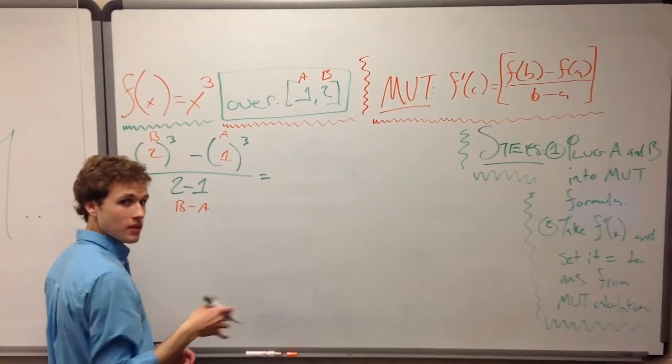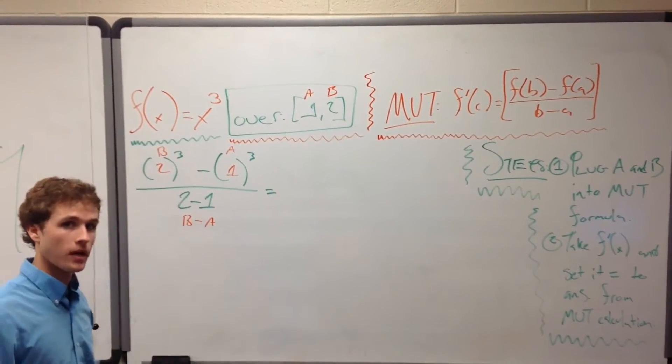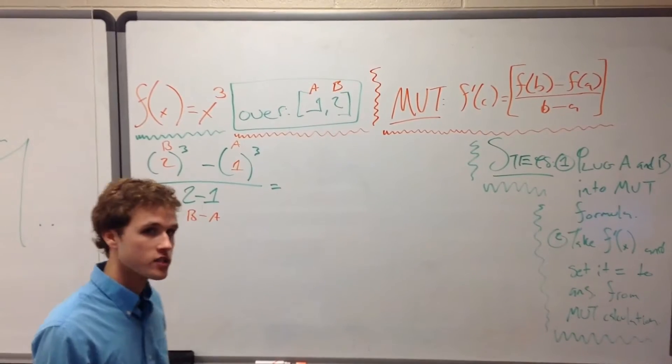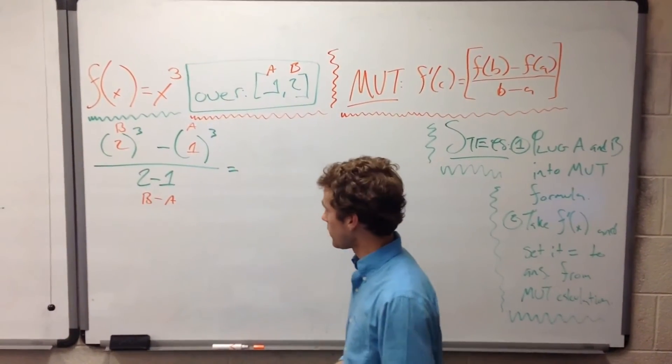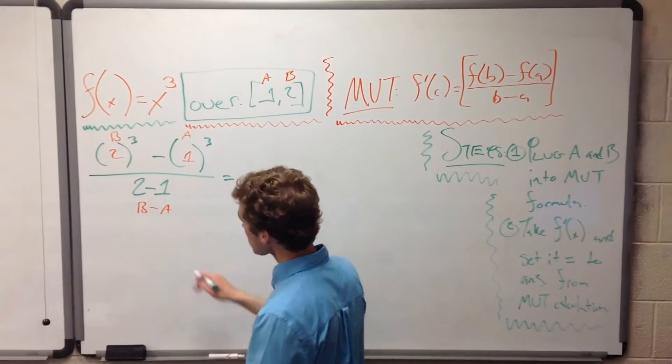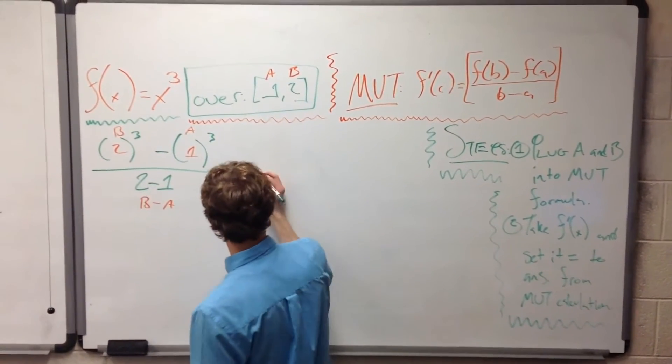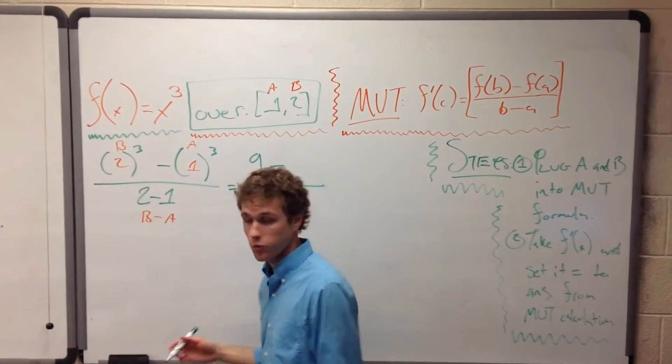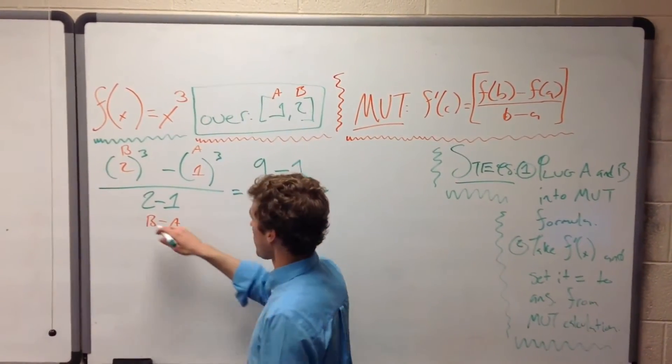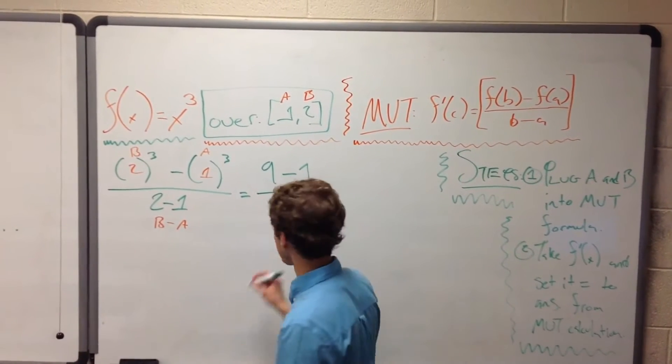Now, this math isn't exactly hard to do this type of arithmetic, but I want to do every single step just so that nobody gets lost depending on what level you're looking at this from. So 2³ is 9. So we have 9 minus 1³ is just 1. 9 minus 1. And our denominator is 2 minus 1, which is 1.